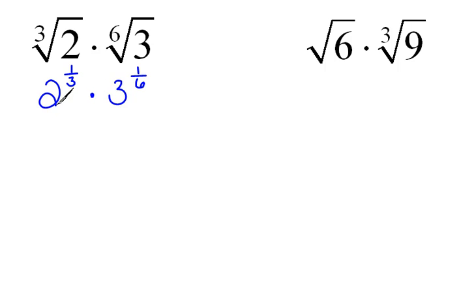And again, because our bases are not the same, we can't work with the exponents. But, we can get those exponents to have the same denominator. We can rewrite 2 to the 1 third as 2 to the 2 sixth.